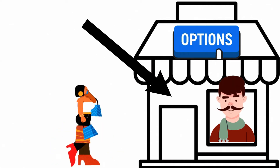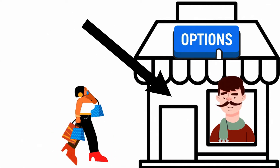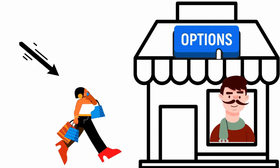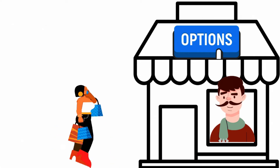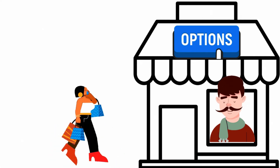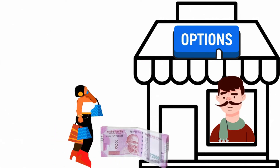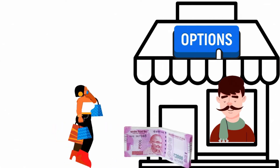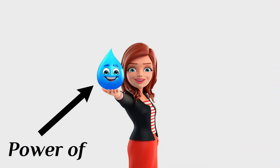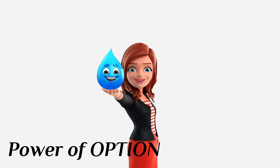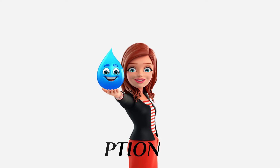Imagine this is a shop selling something known as options — this guy is the seller, and this is the lady that wants to buy options. Now for buying something you need to pay money. So she pays the money and buys the power of options. But what is the option for?